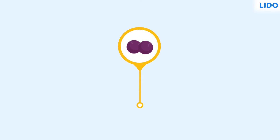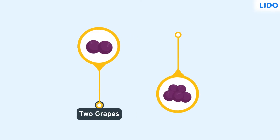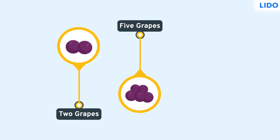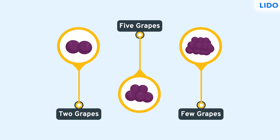If you had just two grapes, then you would have just two grapes. If you have five grapes, then you'd say you have five. Now if you had about 20 grapes, then you'd describe them as a few grapes, right?